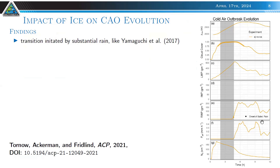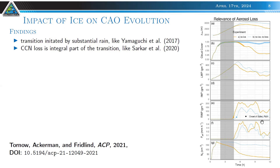What if we don't allow droplet numbers to decrease — if we retain aerosol? In this experiment, the orange line has interactive aerosol that can be consumed, while the blue line doesn't allow aerosol loss. With retained aerosol, droplet number concentration is maintained, cloud cover stays at 80% or above, liquid water path is allowed to grow a little more, and rain is delayed and generally smaller in magnitude. CCN loss is thus an integral part of the cloud transition.